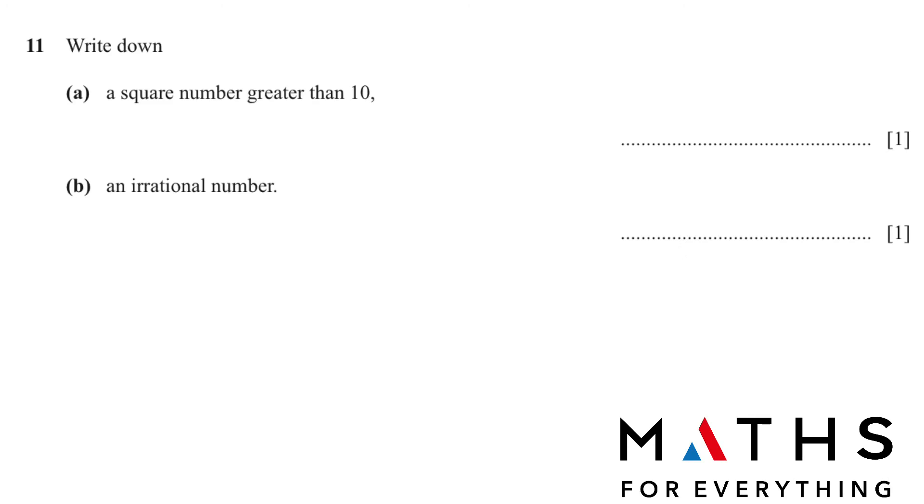11. Write down a square number greater than 10. You know what are square numbers, right? When you multiply the number by itself, you can write any number. You know 2 times 2 is 4, 3 times 3 is 9. We want a number greater than 10. So 4 times 4, 16 or 25, 36, whatever.